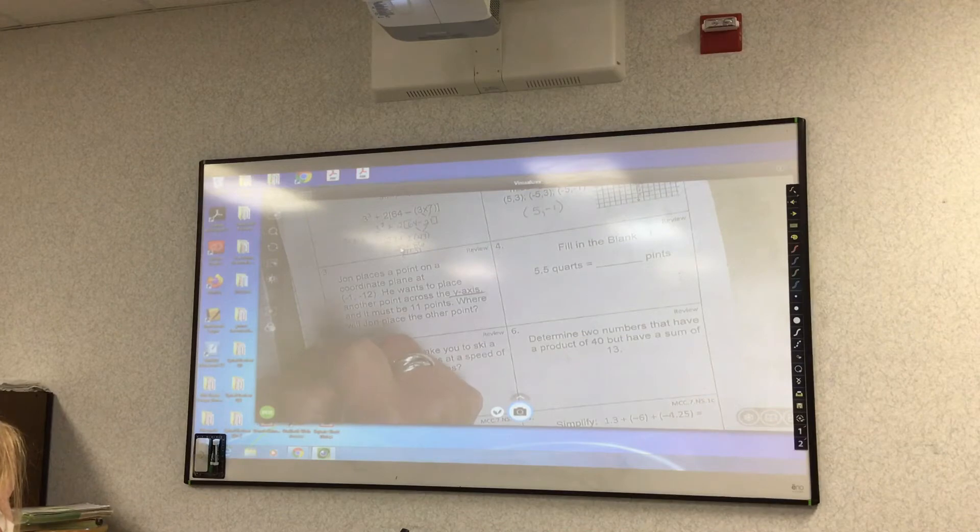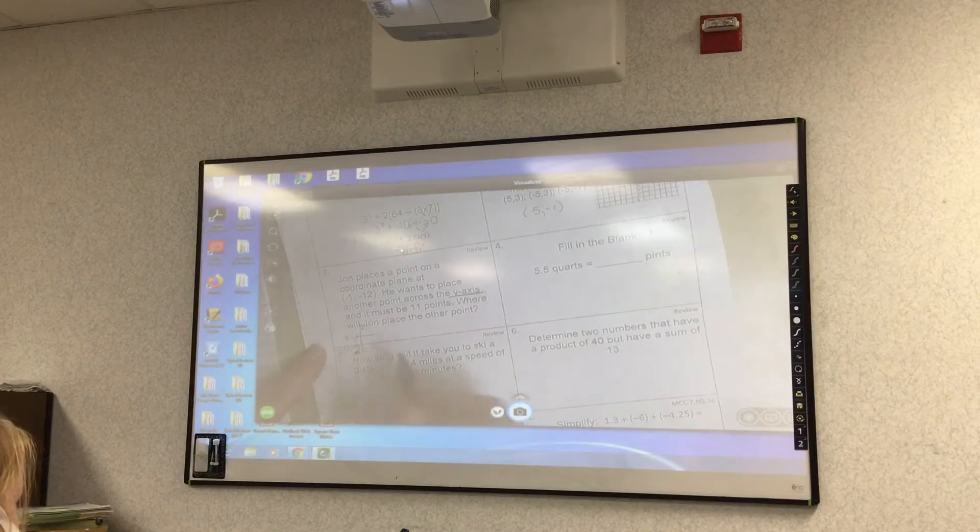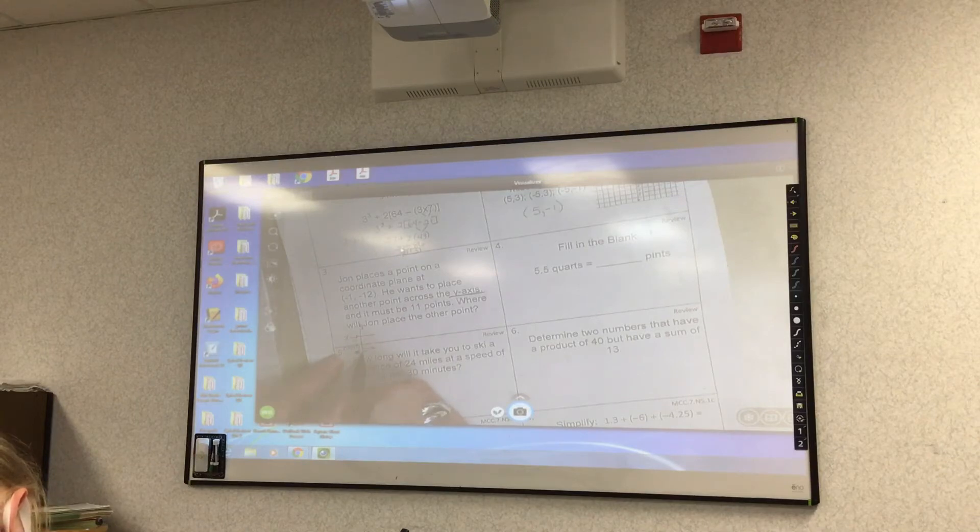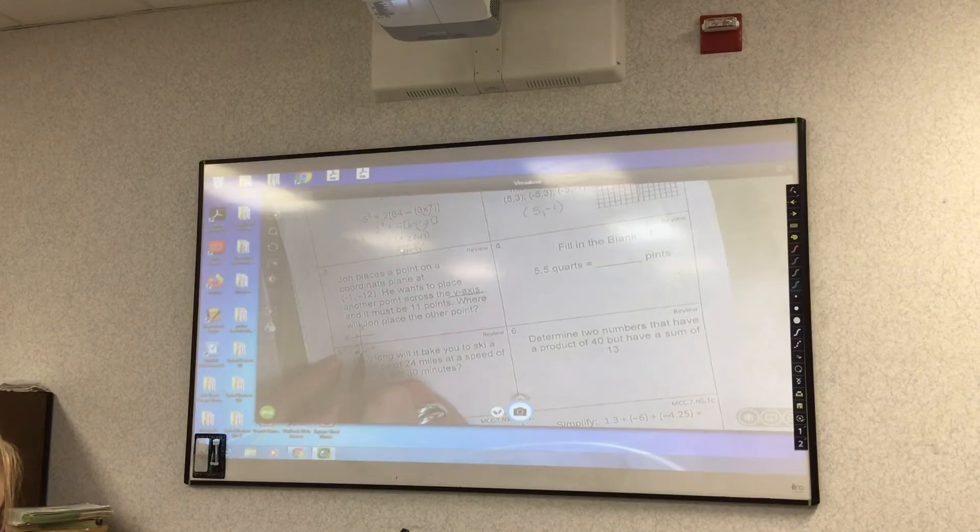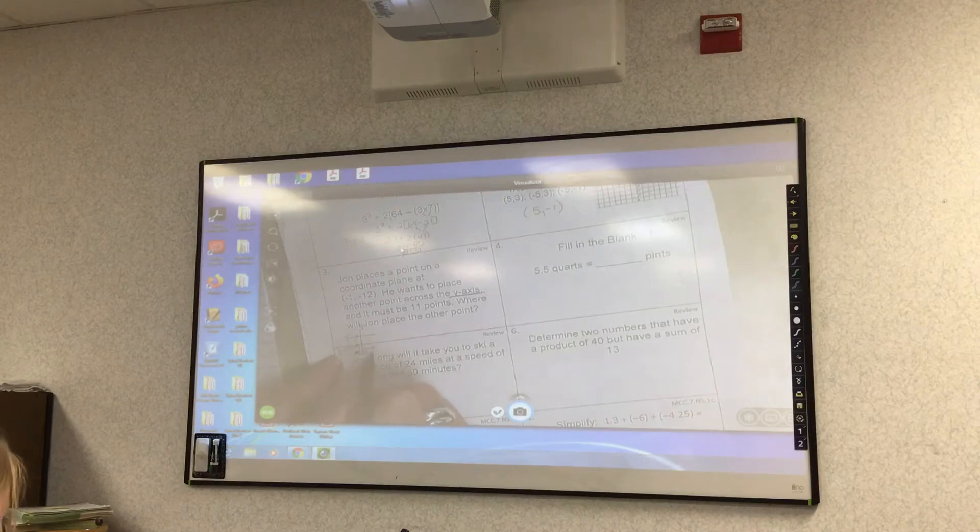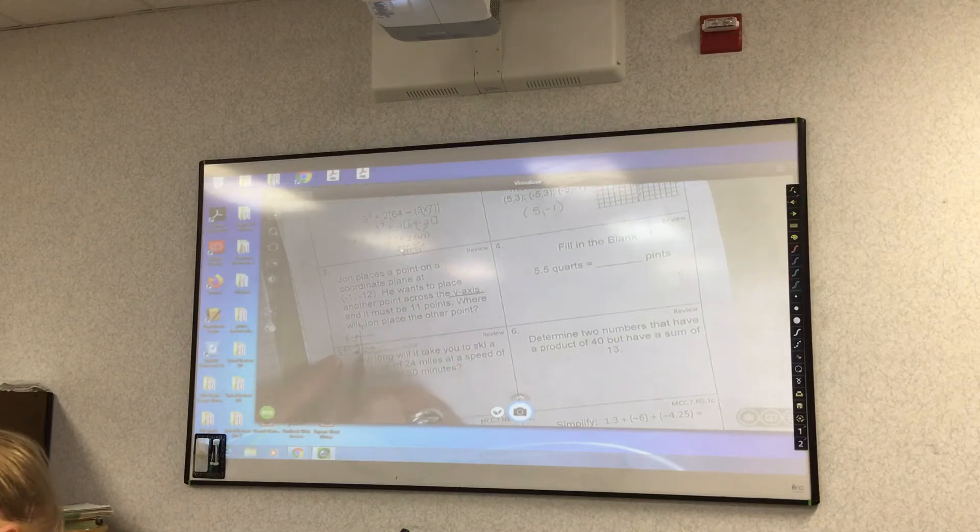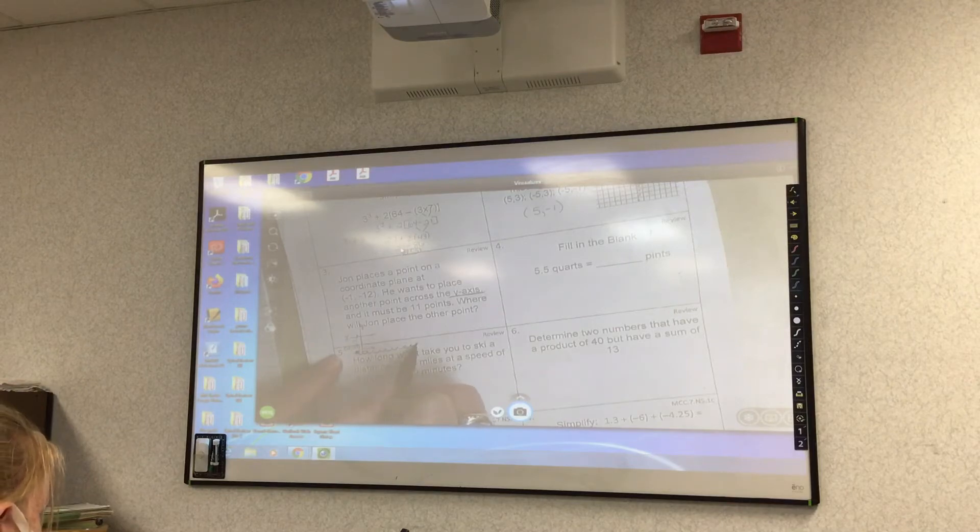Label your axis. This is x, this is y. So it has to go across the y-axis, and I need to go 11 points. If I'm here at a negative one to get to the zero, how many more do I need to go? Ten. So I need to go 1, 2, 3, 4, 5, 6, 7, 8, 9, 10, and go one more to make it 11.